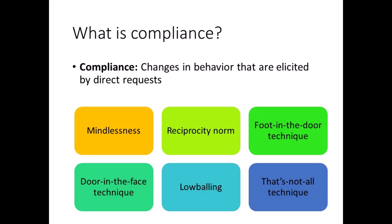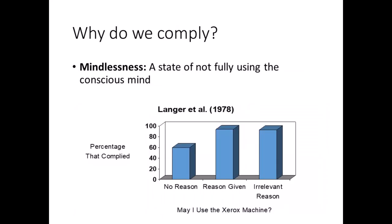Let's learn more about each of these strategies and the research behind them. Mindlessness is a state of not fully using the conscious mind, and it can make us more vulnerable to compliance. The way a request is phrased makes a difference — for instance, talking fast, catching people off guard, and providing a reason, even if it's a terrible one, can improve compliance.